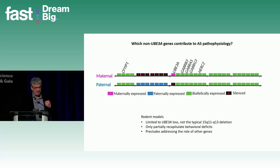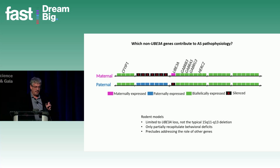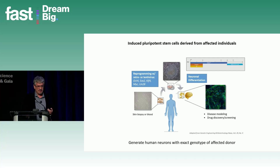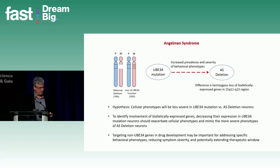When we study the effects of UBE3A reinstatement in these models, we're looking to reverse the effects of loss of UBE3A, but we still don't have a good handle on what UBE3A reinstatement will do in the context of the larger deletion. To address this, we're going to use iPS cells, which allow us to generate human neurons with the exact genotype of the affected donor. In parallel with work at Yale, we've generated iPS lines from deletion AS and various classes of non-deletion AS individuals to address the specific role of non-UBE3A genes.